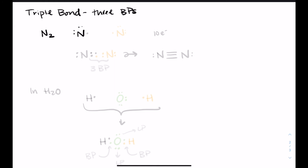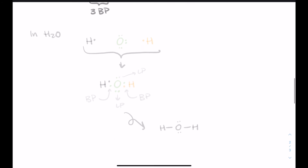Let's do a triple bond — sharing three bonding pairs. Nitrogen has valence electrons 2s2, 2p3, giving it five valence electrons. If it shares three of those with another nitrogen, and that nitrogen shares three back, each nitrogen has two electrons not shared and three that are shared. There are six total bonding electrons between the two nitrogens — three bonding pairs. One line for each pair means a triple bond: three lines between the nitrogens, and then two unshared electrons — one lone pair — on each nitrogen.